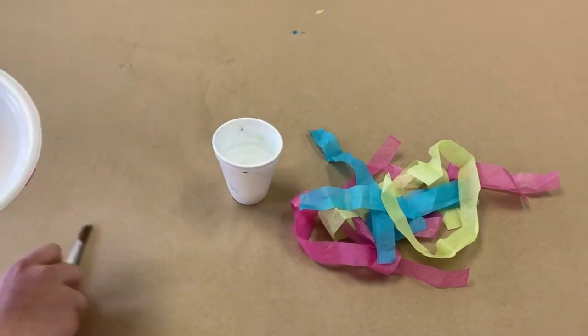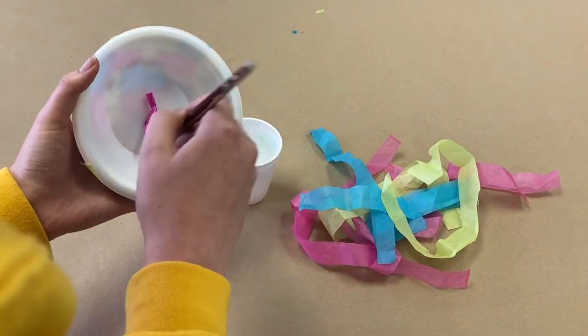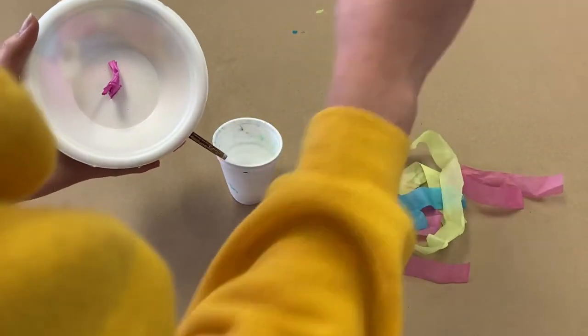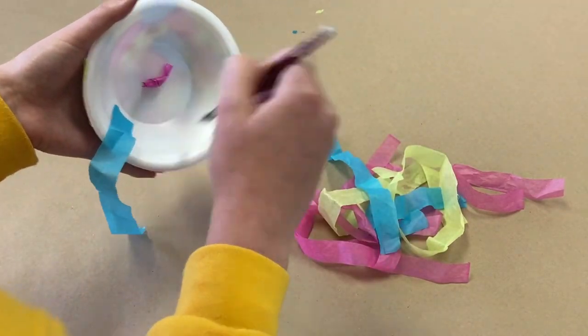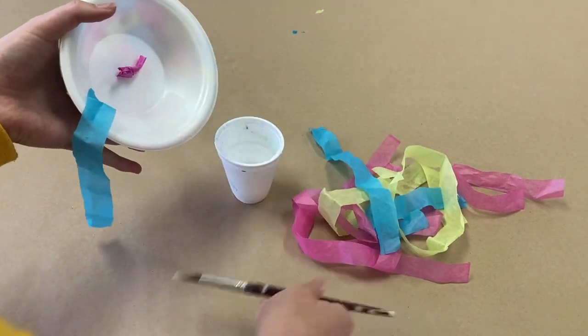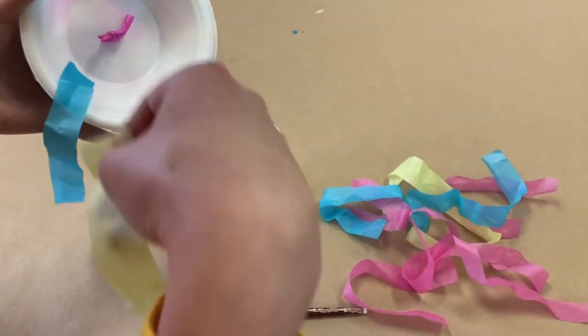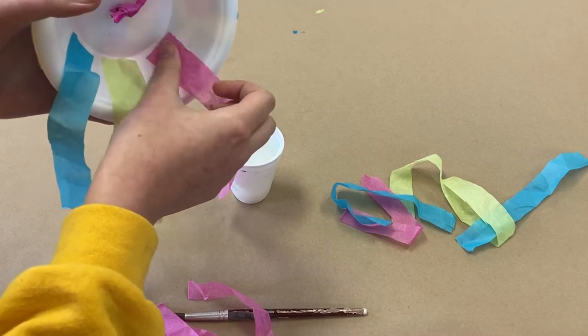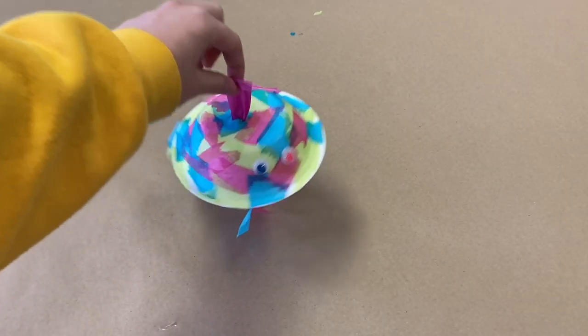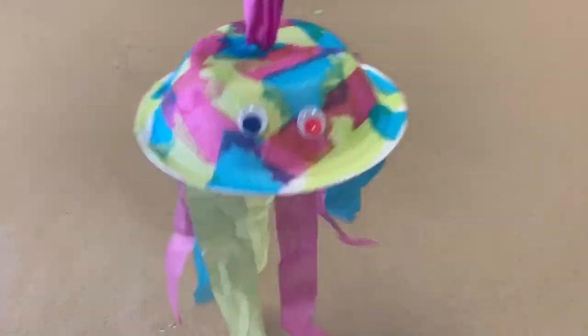Finally, glue your long strands of tissue paper to the underside of the bowl. Continue all around the bowl, wait for the glue to dry, and then play with your new jellyfish friend.